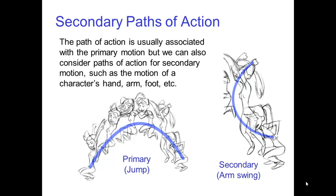The path of action is usually associated with the primary motion, such as the trajectory in a jump. We can also consider paths of action for secondary motion, such as the motion of a character's hand, arm, foot, etc.